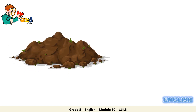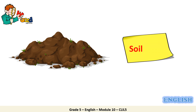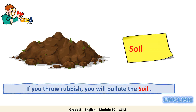Let's have a look at this picture. What can you see? It is brown — it is basically the skin of earth. Soil. Excellent! If you throw rubbish, you will pollute the soil. It is a noun.